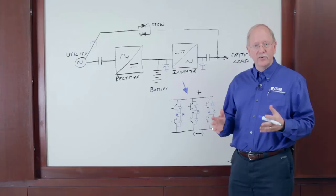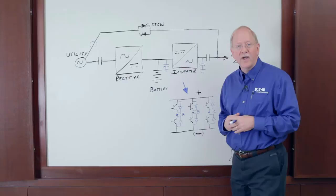So on the board here we have a one-line diagram of a traditional double conversion UPS, the rectifier, the inverter, the static switch, and the critical bus output.